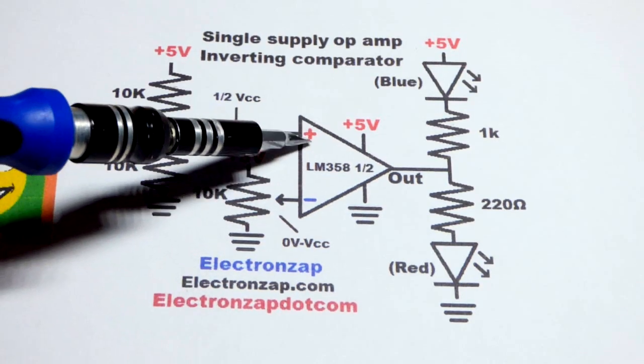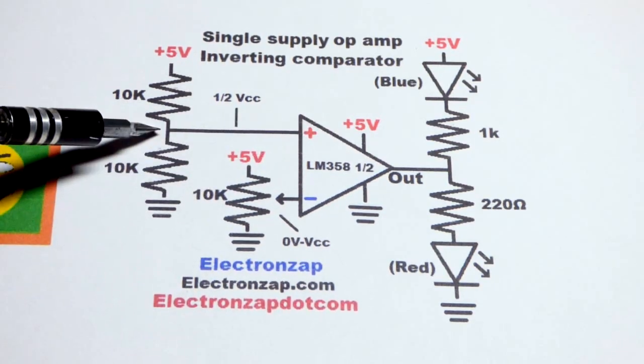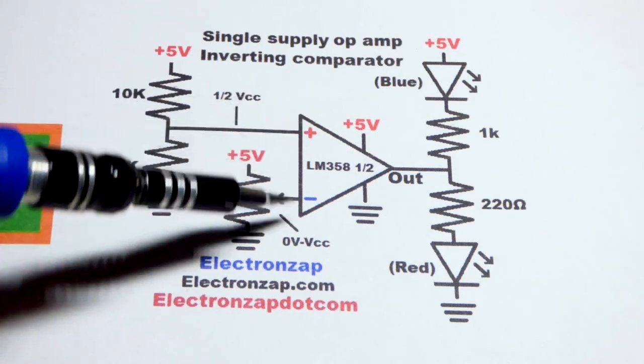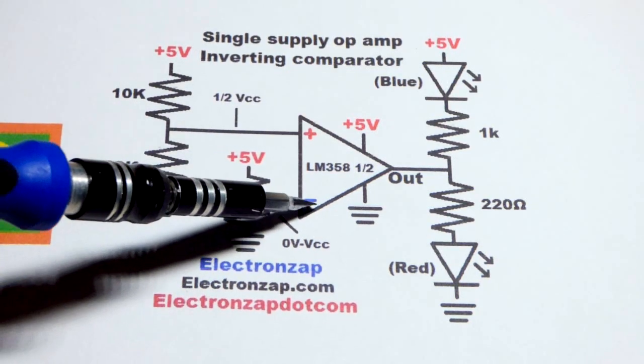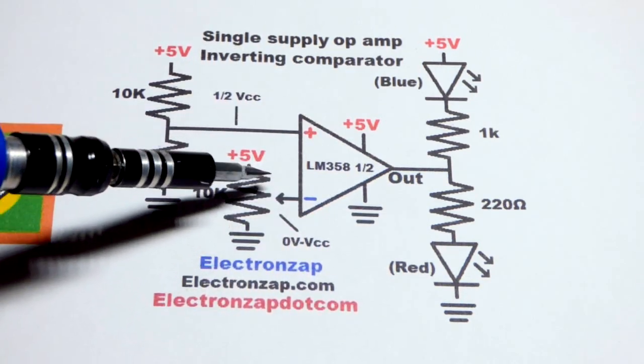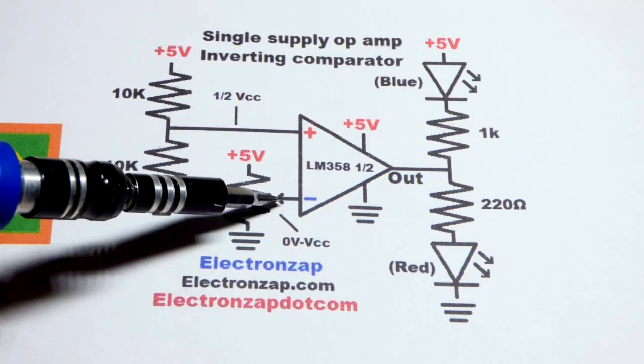And so now the non-inverting, the plus, is to our fixed voltage. That's the one that we're going to change the voltage in relationship to. The inverting input is to the trim pot, where we can change the voltage.